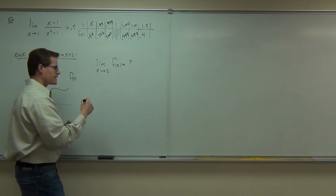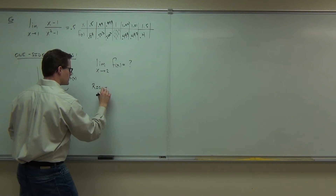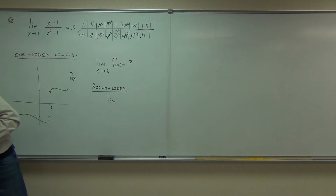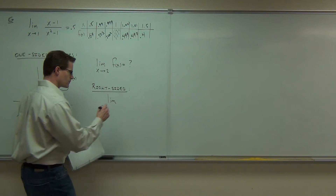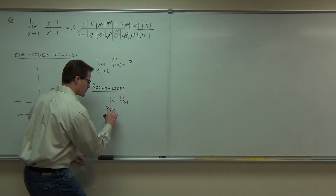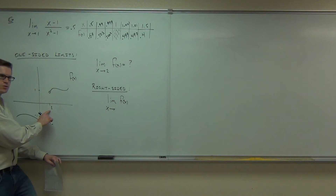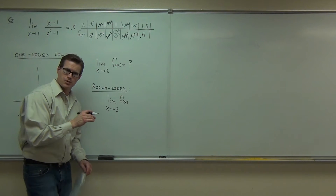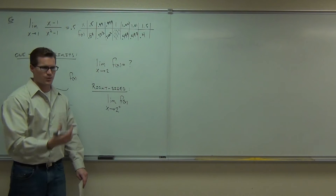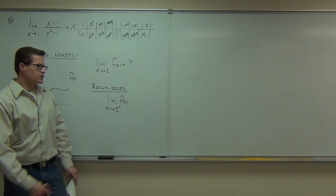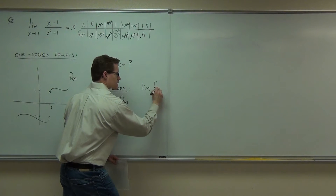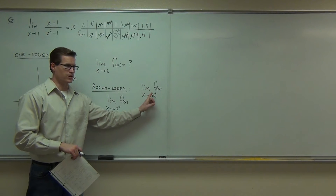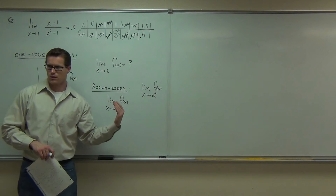Here's how you write a right-sided limit. In our case, it would be the limit of our function as x approaches whatever value — in this case, two. How you say from the right-hand side is you put a little superscript plus. That means from the right. In general, you'd write: the limit of f of x as x approaches a from the right — that's a right-sided, one-sided limit. So plus means from the right.